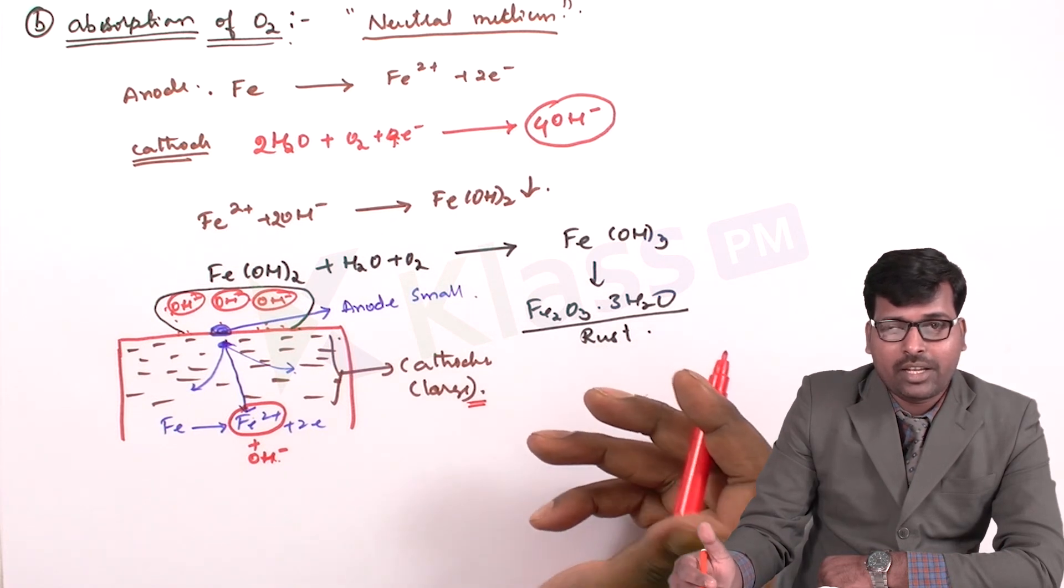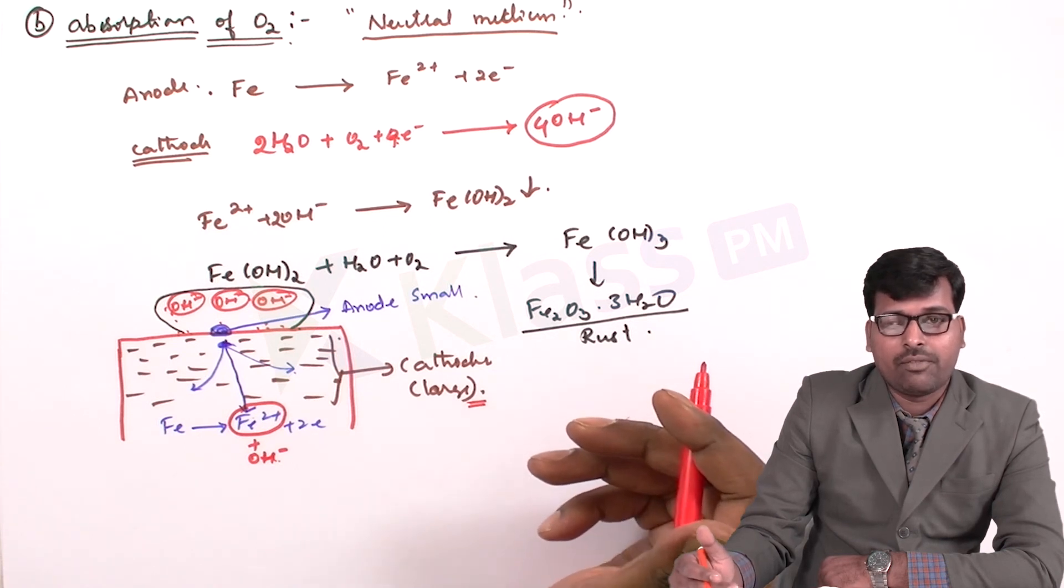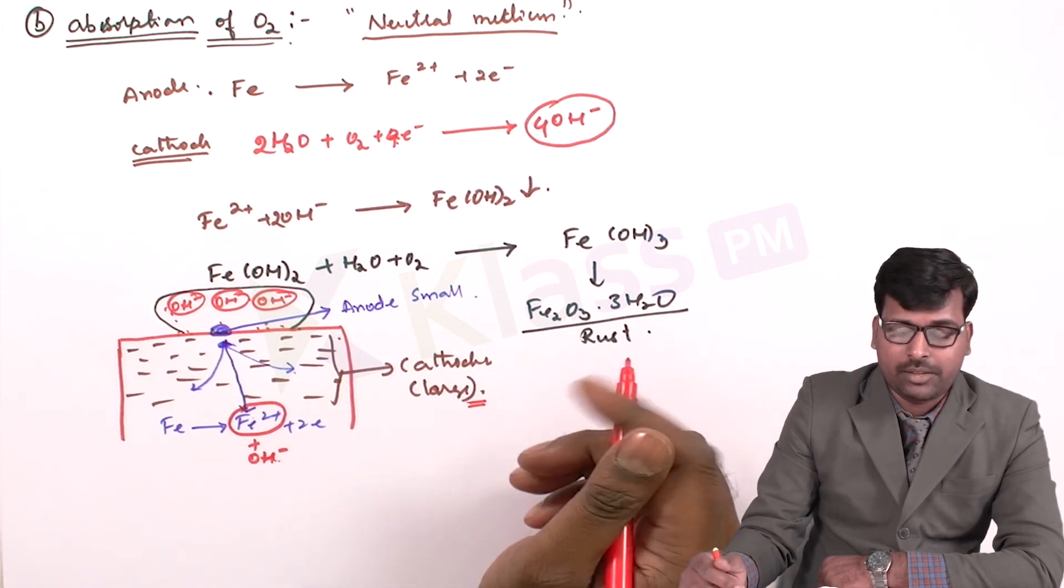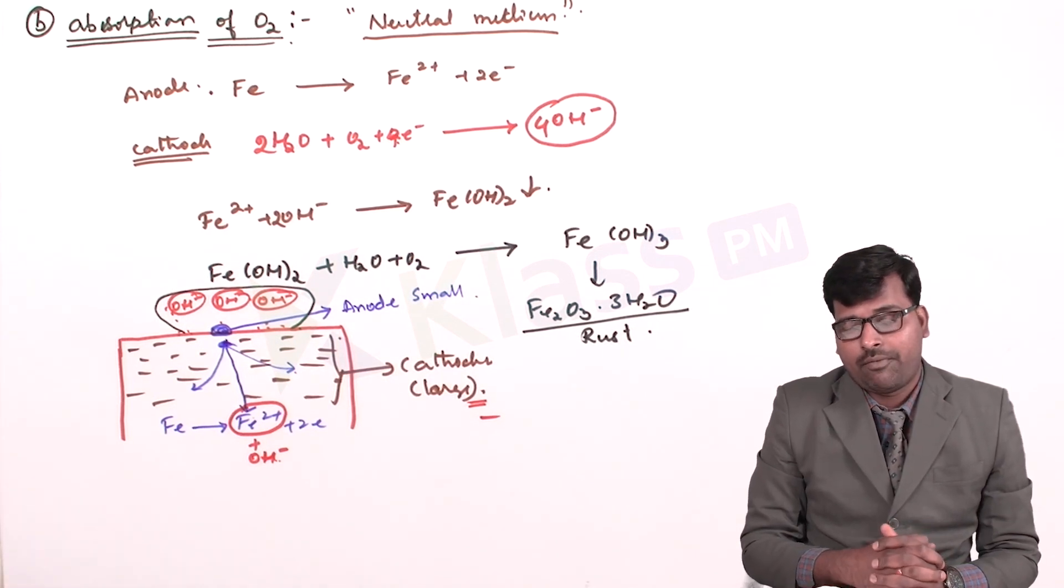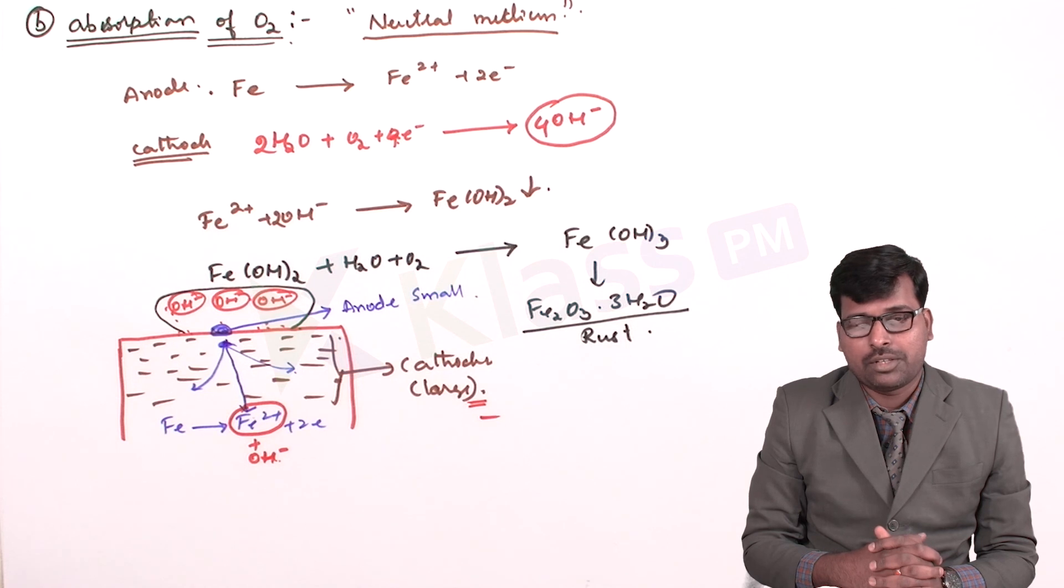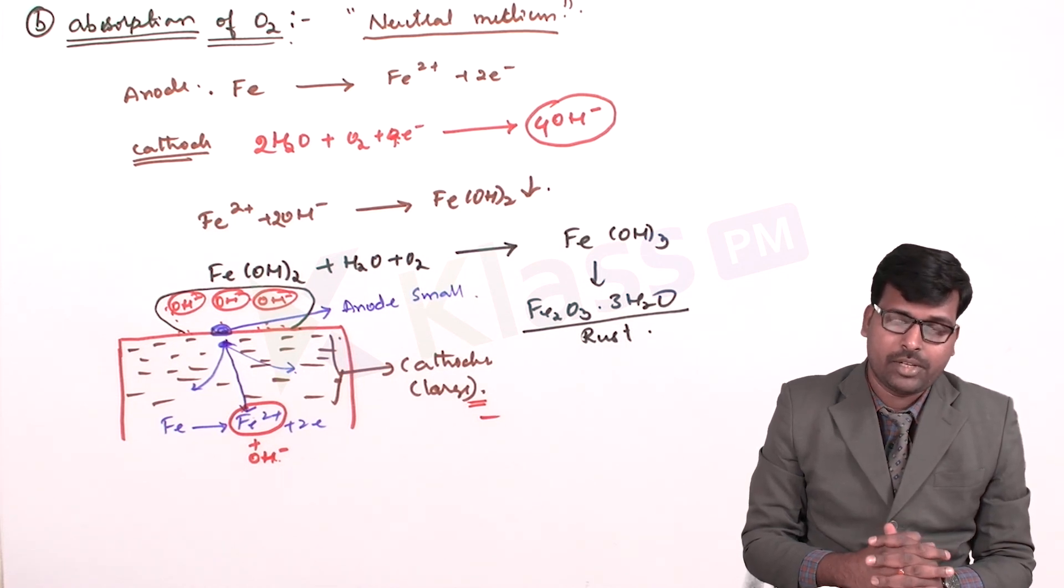It will corrode very spontaneously if it will give off the Fe2+ ions to the cathode. Larger cathodic area, smaller anodic area, the rate of corrosion will be very much high. This is the absorption of oxygen mechanism of wet and electrochemical corrosion of iron. What we explain now. Thank you.